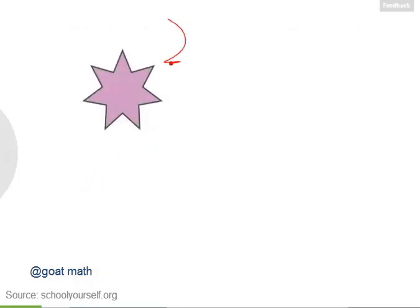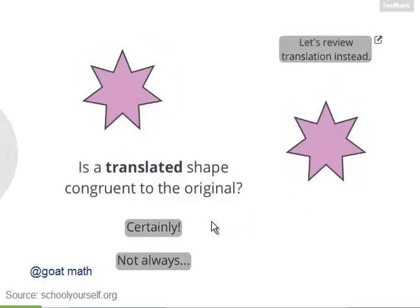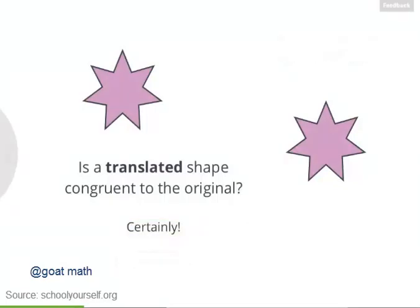Next, take a look at this shape here. If we were to translate or move this shape without reflecting or rotating, is the translated shape congruent to the original? Translating something does not change its overall shape or size, so translation preserves congruence.